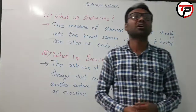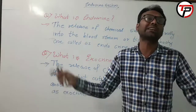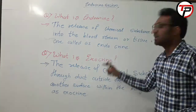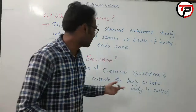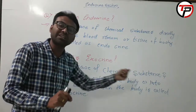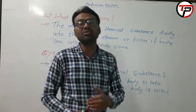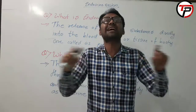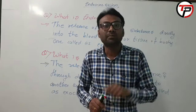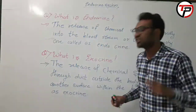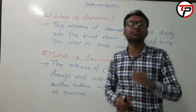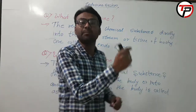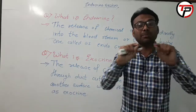Which gland is called an exo-endocrine gland? The answer is the pancreas. The pancreas releases insulin as a hormone into the blood — that is the endocrine function. But the pancreas also releases enzymes such as digestive juices for digestion through ducts — that is the exocrine function. So the pancreas is both an endocrine and exocrine gland, making it an exo-endocrine gland.